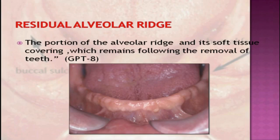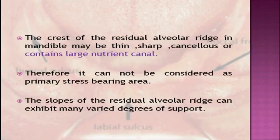The residual alveolar ridge is the portion of the alveolar ridge and its soft tissue covering which remains following the removal of teeth. The crest of the residual alveolar ridge in the mandible may be thin, sharp, cancellous, or contain large nutrient canals; therefore, it cannot be considered as a stress-bearing area.